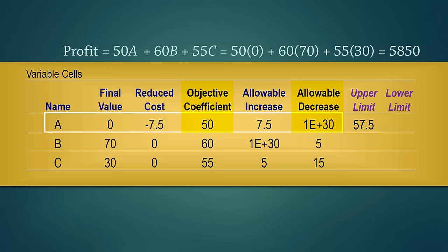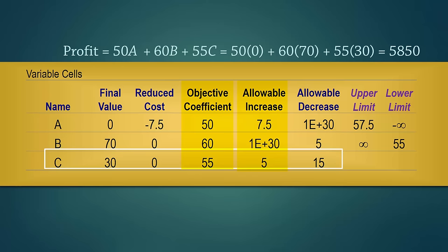For B, the upper limit will be infinity, and the lower limit will be 60 minus 5 which gives 55. For C, we have 60 for the upper limit, and 40 for the lower limit.